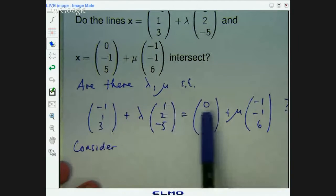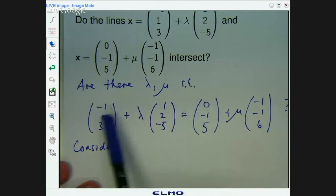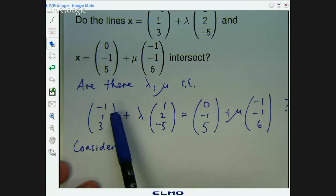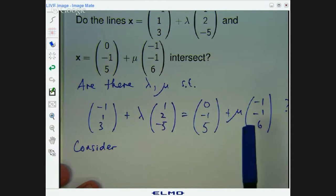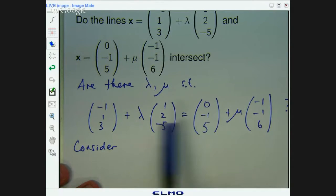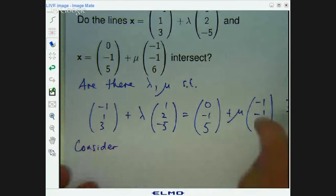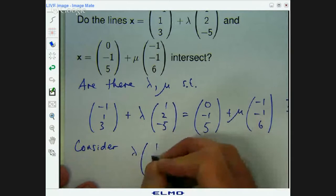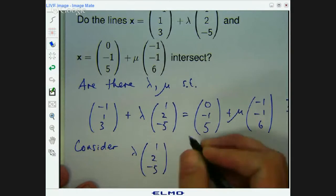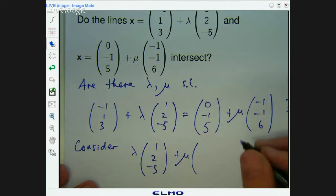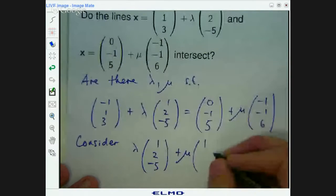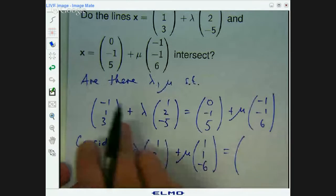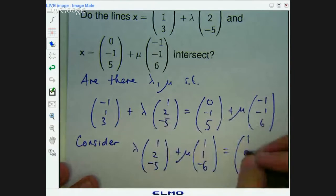Let's just consider that. If I take this to the other side, I'll get negative one minus one, and I'll get five minus three on there. And over the other side, I'll get the following.